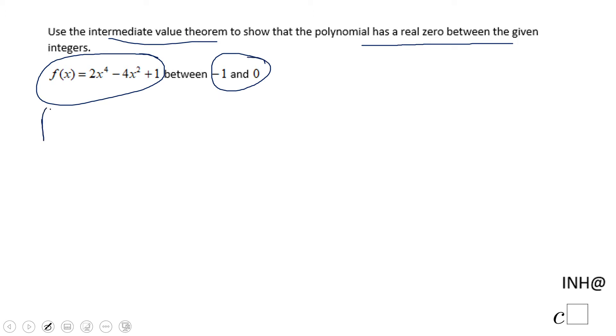So what we need to do is calculate first the value of the function at -1, which in this case is going to be 2 times (-1) to the fourth power minus 4 times (-1) to the second power plus 1.